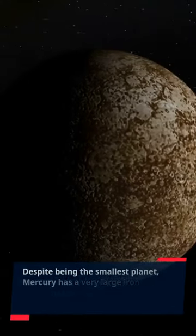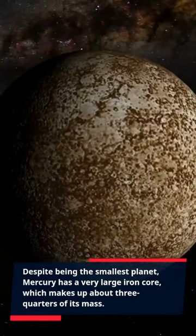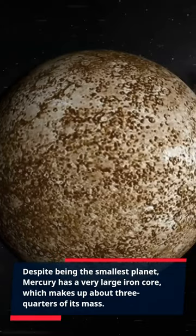Despite being the smallest planet, Mercury has a very large iron core, which makes up about three-quarters of its mass.